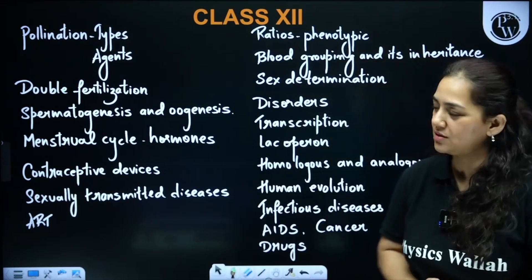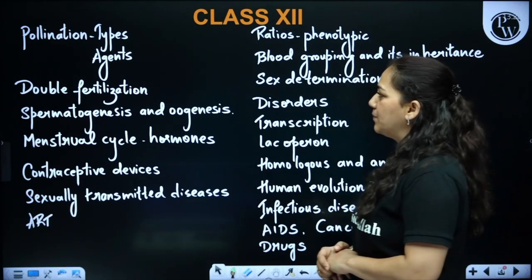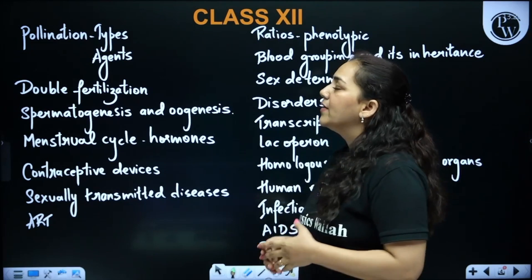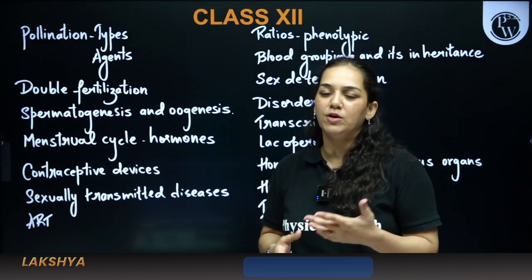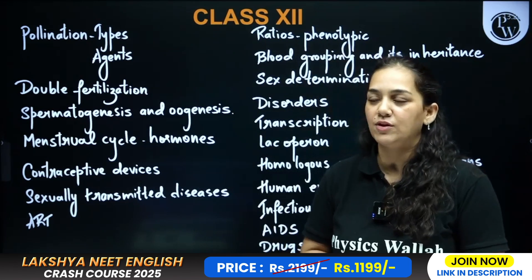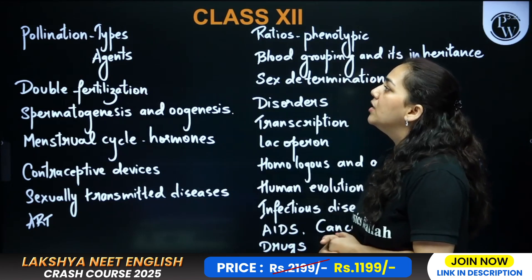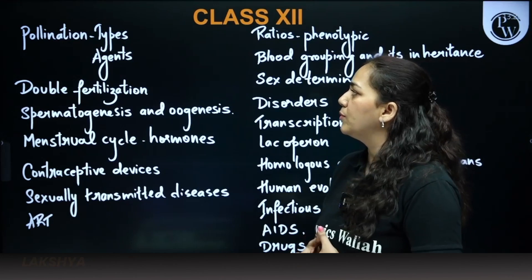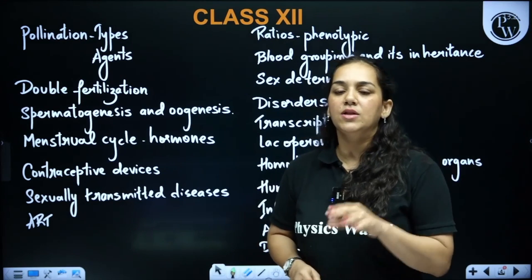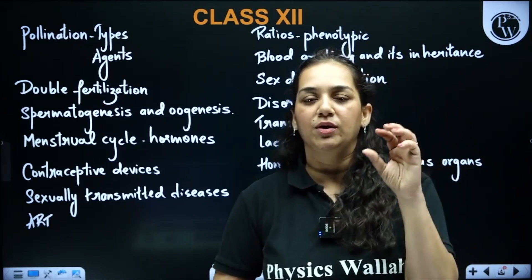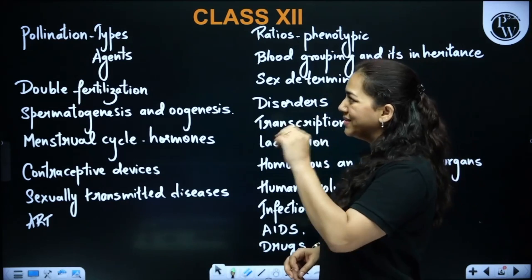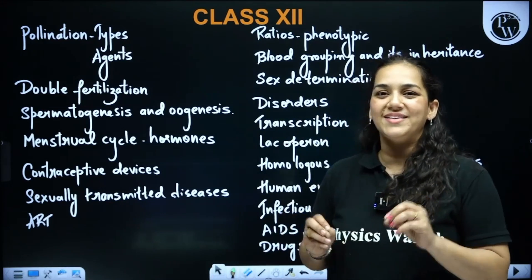Starting with the chapter 'Sexual Reproduction in Flowering Plants' — especially if you pull out the paper of 2024 and the last five years — you will see a lot of questions on pollination types and agents. I would suggest you prepare around this, including the definitions and examples.